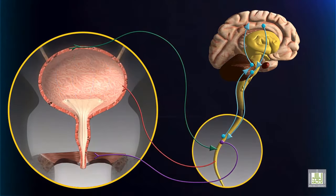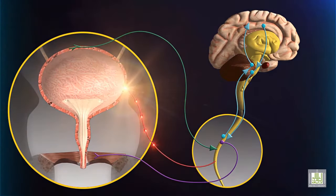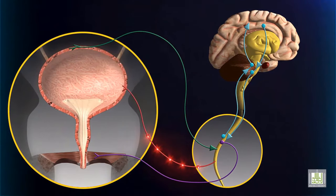In response, parasympathetic neurons from the spinal cord to the bladder are activated, and this causes the smooth muscle on the bladder wall to contract.